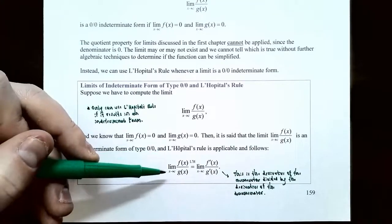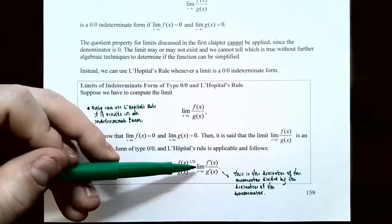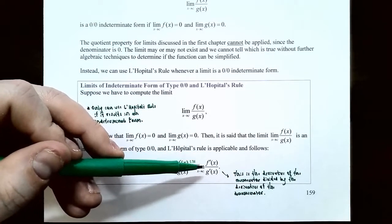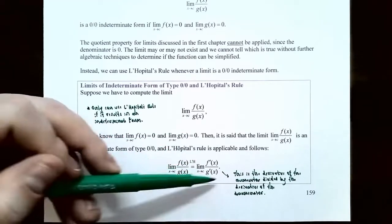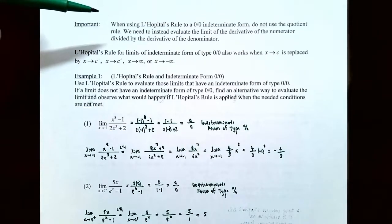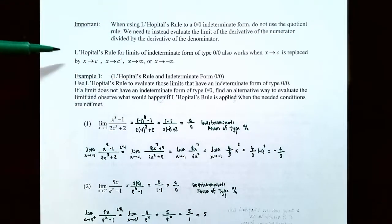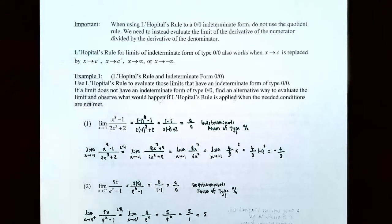L'Hôpital's rule states: the limit as x approaches c of f(x)/g(x) equals the limit as x approaches c of f'(x)/g'(x) — the derivative of the numerator divided by the derivative of the denominator. This does not mean the quotient rule. You take the derivative of the numerator separately and the derivative of the denominator separately; do not use the quotient rule. L'Hôpital's rule also works when the two-sided limit is replaced with a one-sided limit or an infinite limit (x approaching infinity or negative infinity).